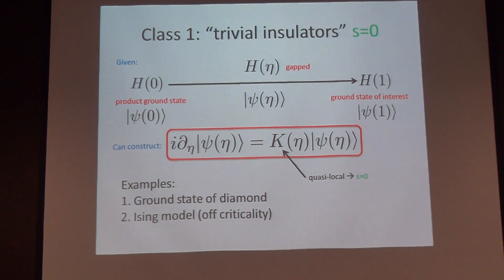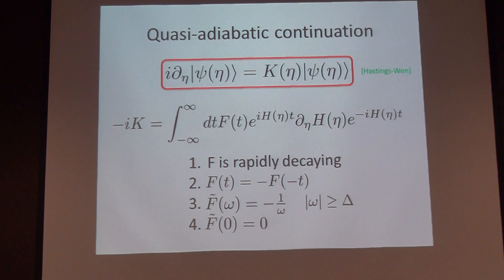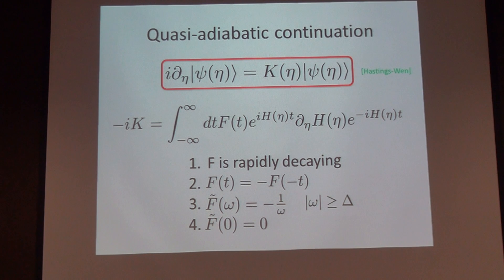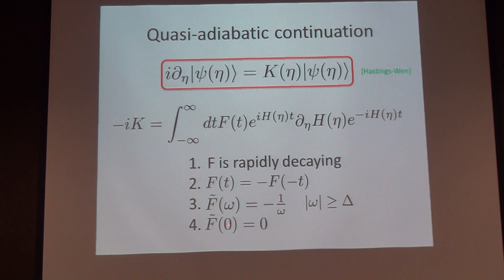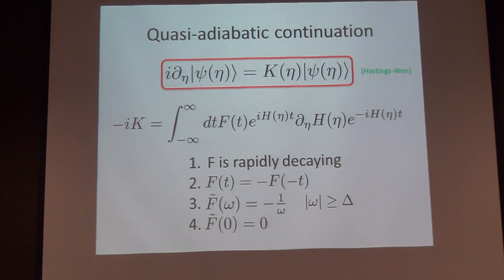Here's actually how it works. I need the help of a special function F. F is a function of time that's rapidly decaying—it can decay faster than any power but not exponentially fast. It should be odd, and it should have the property that its Fourier transform is minus 1 over ω for ω bigger than the gap. This is first-order perturbation theory—that's your formula for the energy denominator. Finally, the Fourier transform at frequency zero is zero. You can see that the reason why it can't be decaying exponentially is because it's smooth but not analytic in frequency space, so it can only decay faster than any power, not exponentially, otherwise it'd be analytic in a strip.